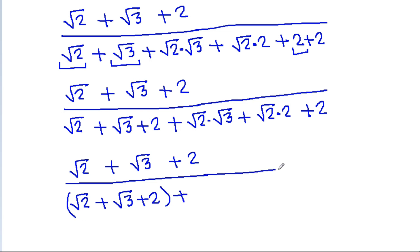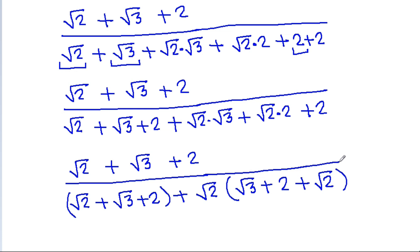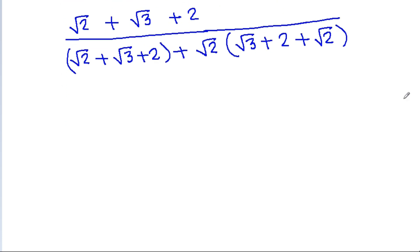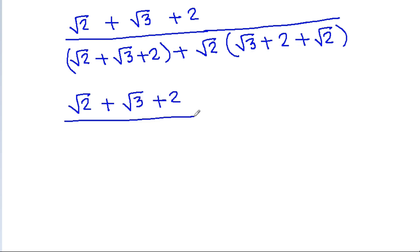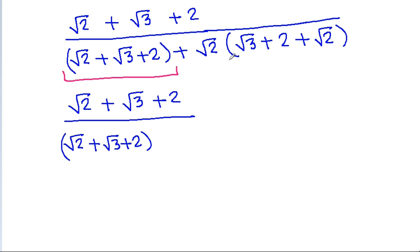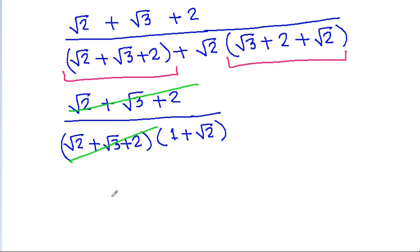Here we can take √2 common, giving (√3 + 2 + √2). Now we can take (√2 + √3 + 2) common from the denominator since these two are the same, and we get 1 divided by (1 + √2).